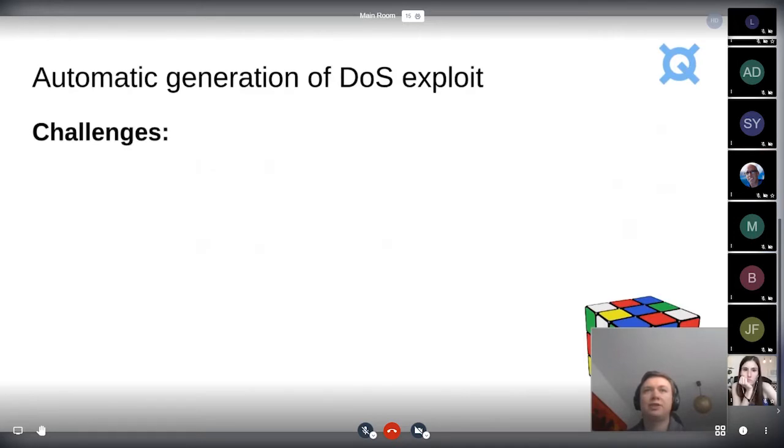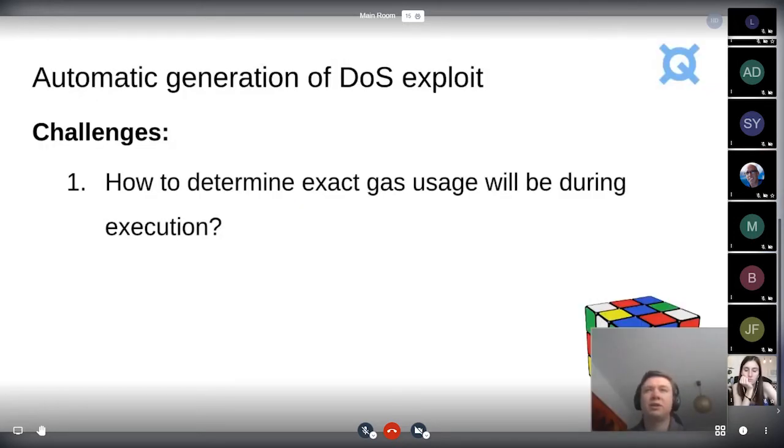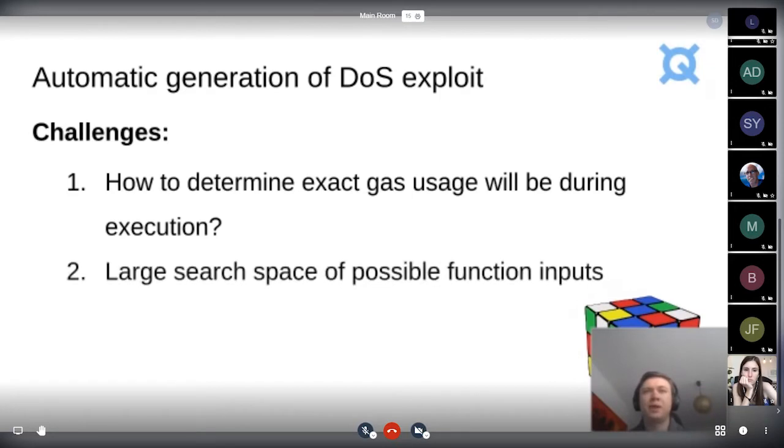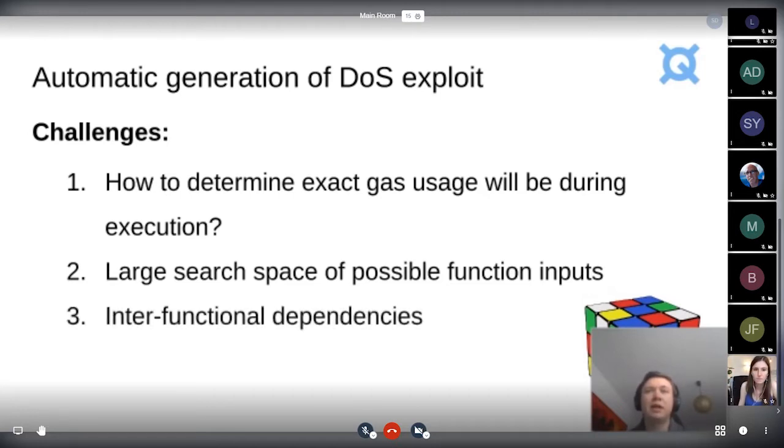There's several challenges. The first one is how do you determine the exact gas usage during execution? Second one is how do you search through the large search space of possible inputs to functions? There could be functions that have several parameters or even there could be multiple functions that need to be called in order to reach a state where this kind of DOS or out of gas error is reached.